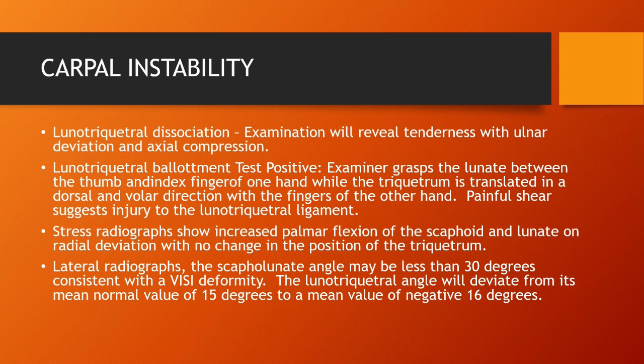On lateral radiographs, the scapholunate angle may be less than 30 degrees, consistent with a ventral intercalated intersegmental deformity. The lunotriquetral angle will deviate from its mean normal value of 15 degrees to a mean negative 16 degrees, indicative of dissociation of the lunate bone from its normal interosseous relationship with the adjacent triquetral bone. Let's take a look at this physical examination maneuver and these x-ray findings.